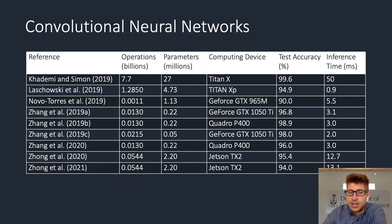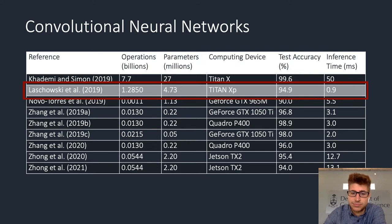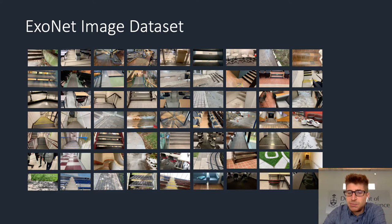Since then, a number of research labs have likewise used convolutional neural networks for image classification of walking environments. However, each of these deep learning models, including our original system, were trained and tested on different computer vision datasets, which makes direct comparisons between these different systems quite challenging. This motivated us to develop the open-source large-scale ExoNet dataset.